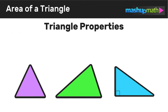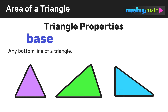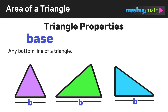Let's review some important triangle properties. The base of a triangle is any bottom line of a triangle. We label the base with the letter B, and B represents whatever value the length of that triangle's base is.